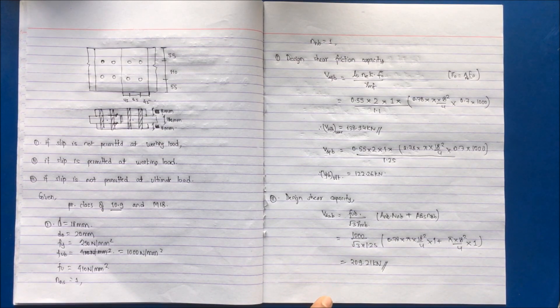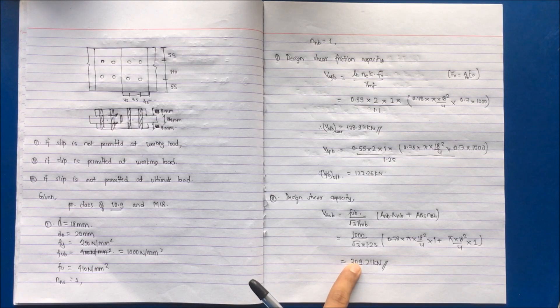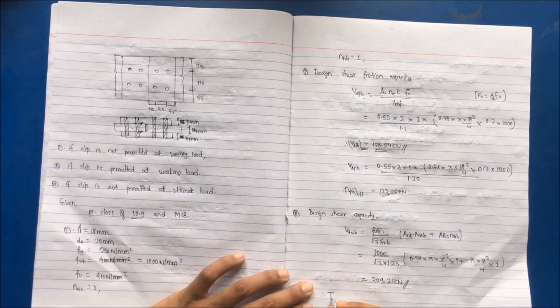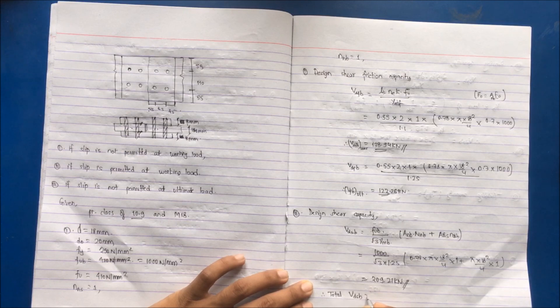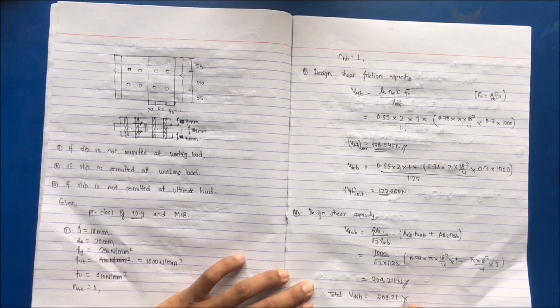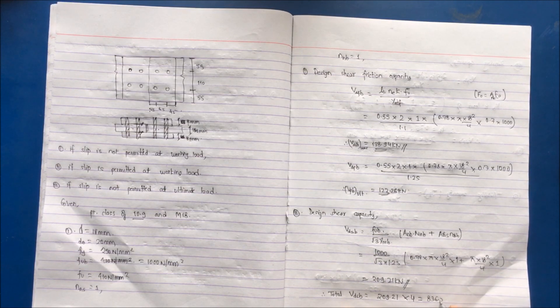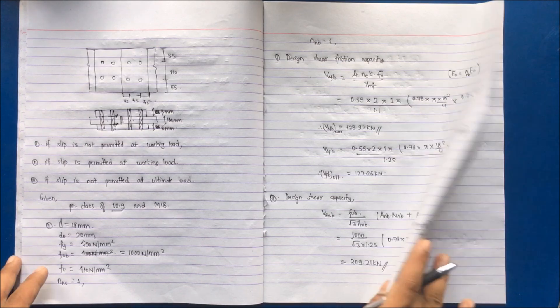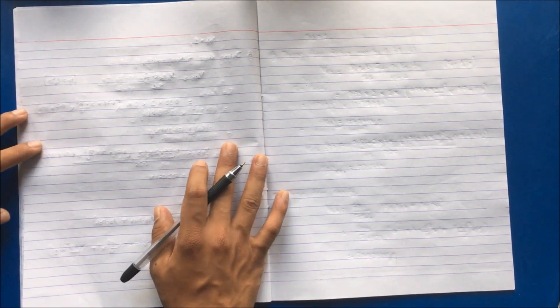That value of 209.21 kN is for a single bolt. The total VDSB for the plate equals 209.21 × 4 bolts = 836.8 kN.